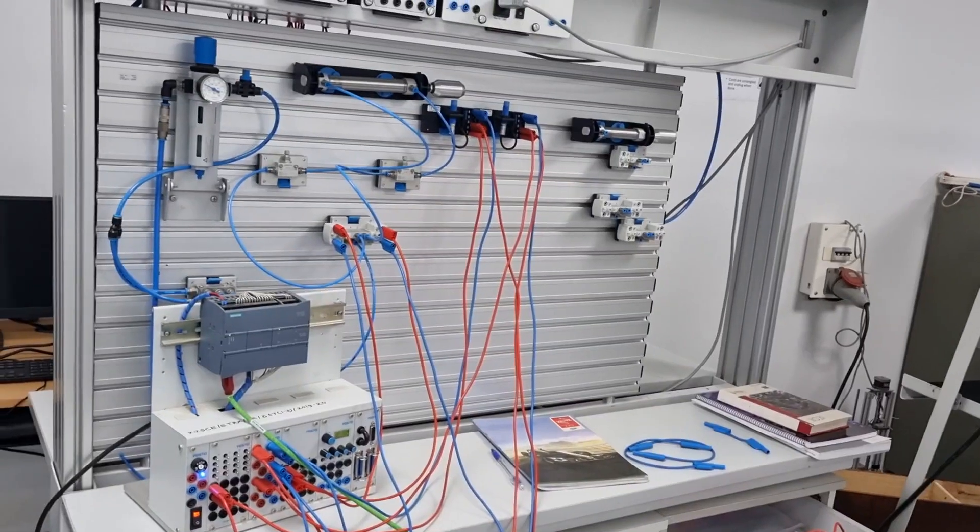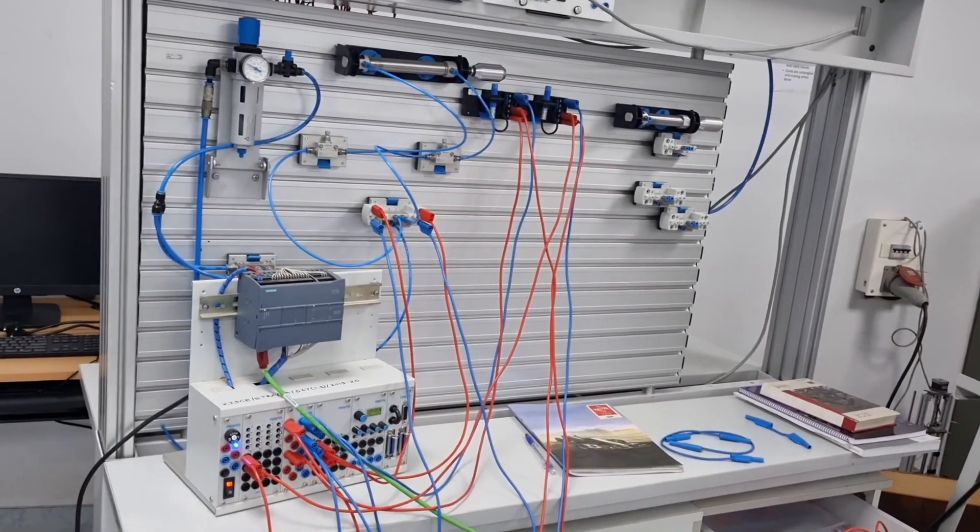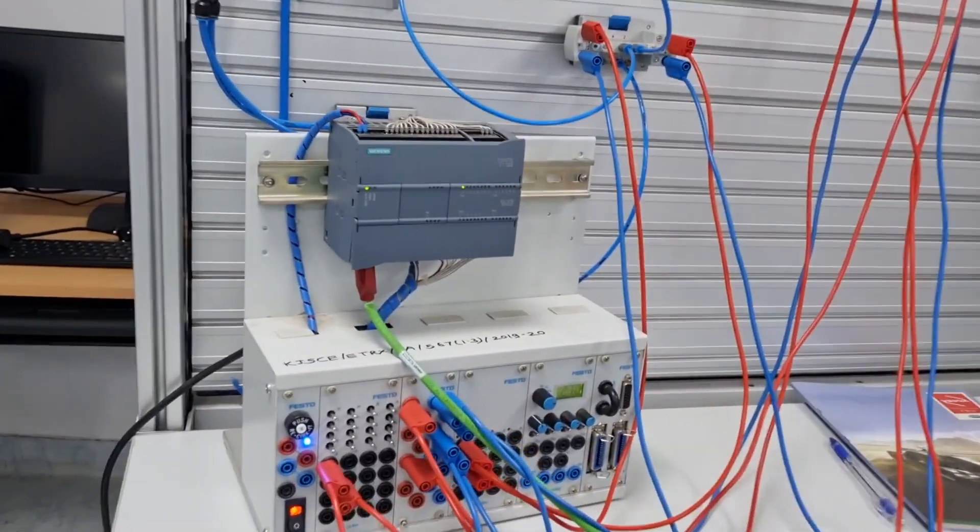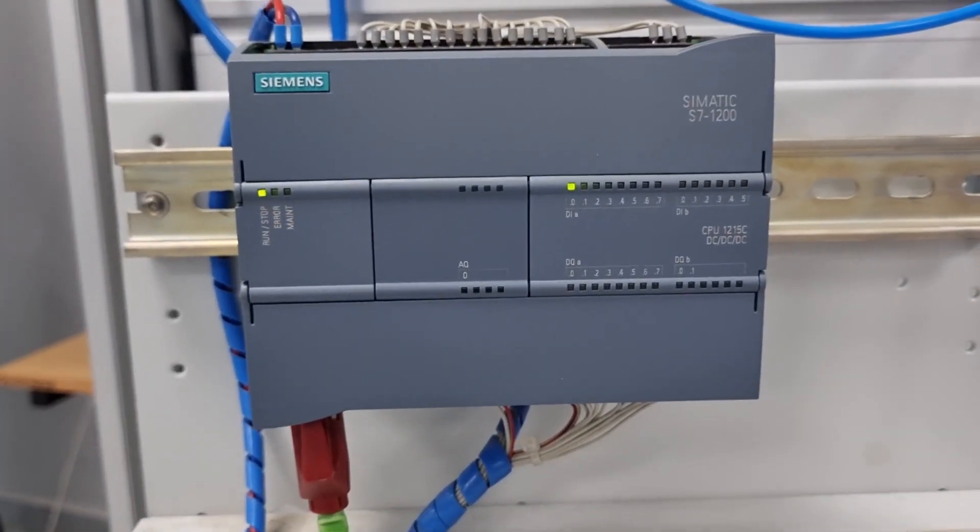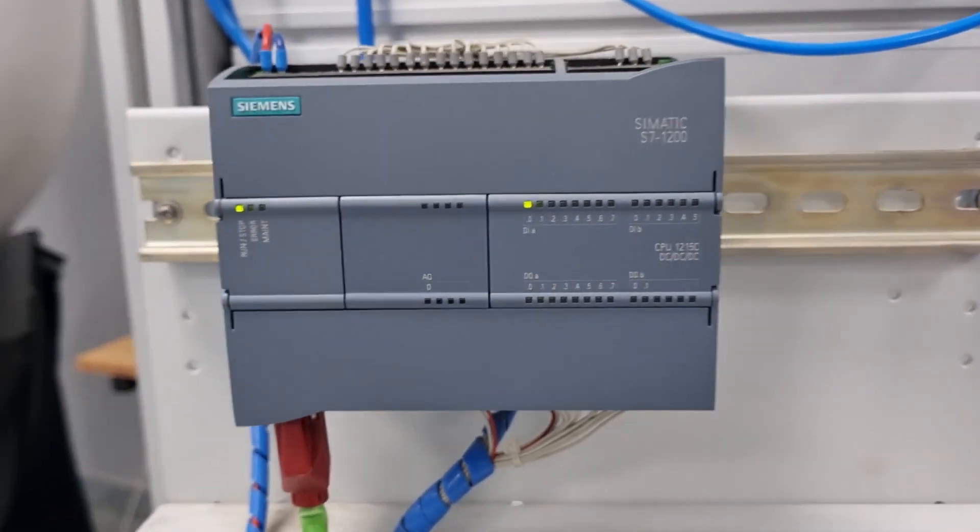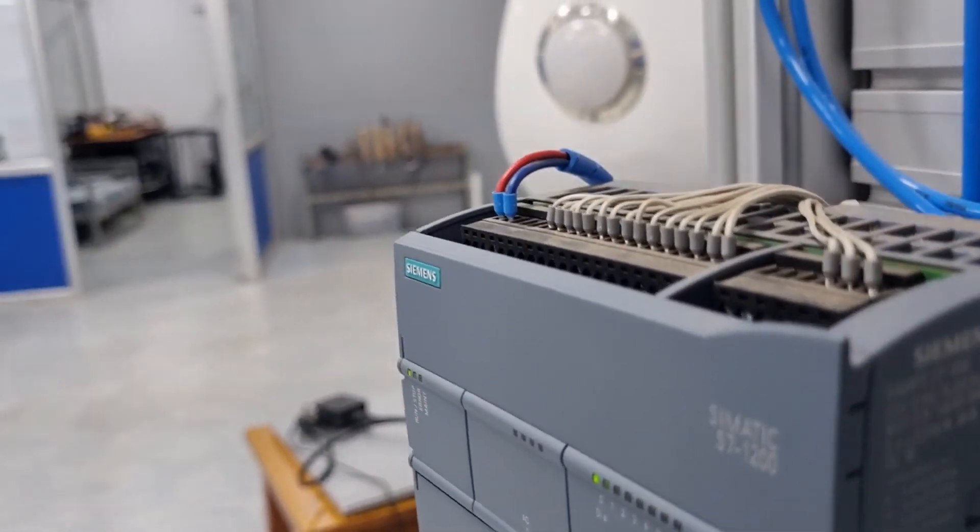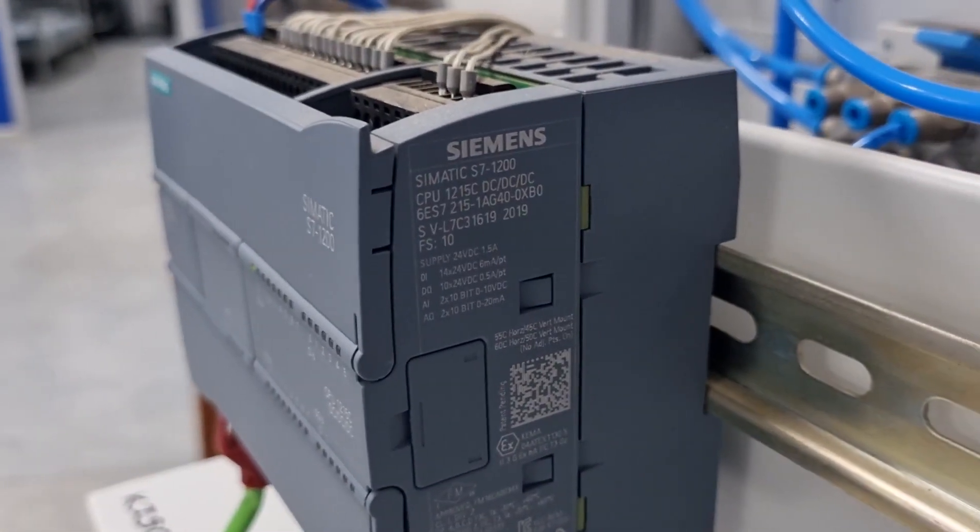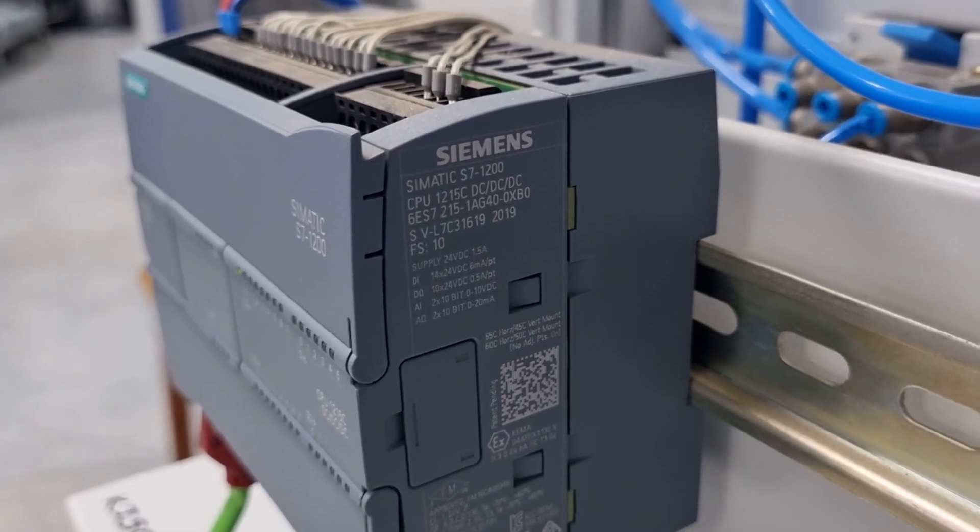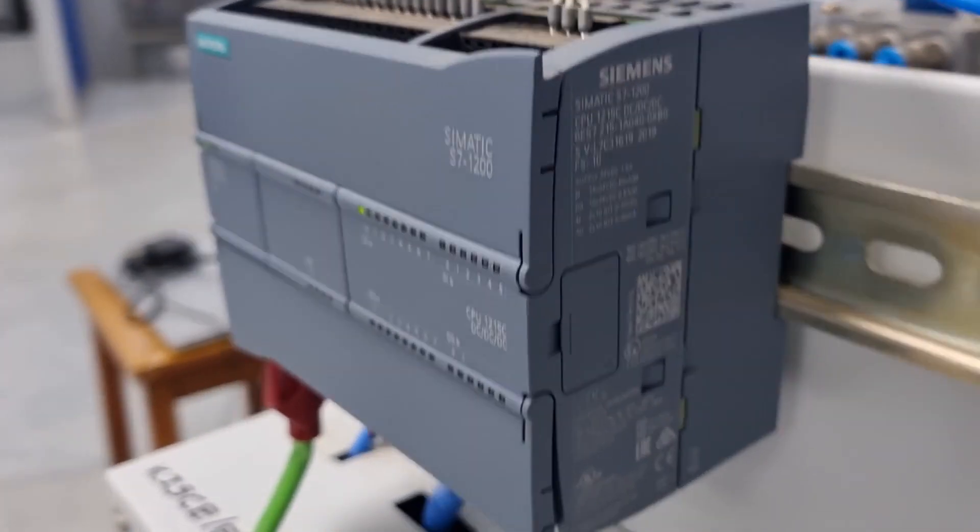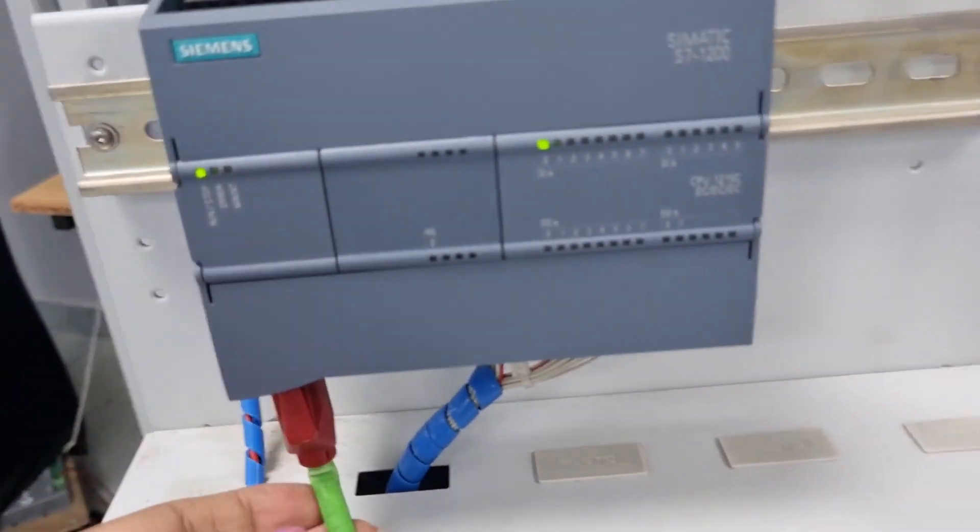This is my hardware setup. I am using a Siemens S7-1200 PLC with part number 1215C. You can see 1215C DC/DC/DC CPU. It is connected through Ethernet.